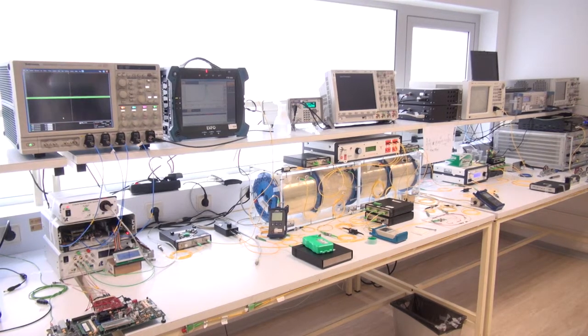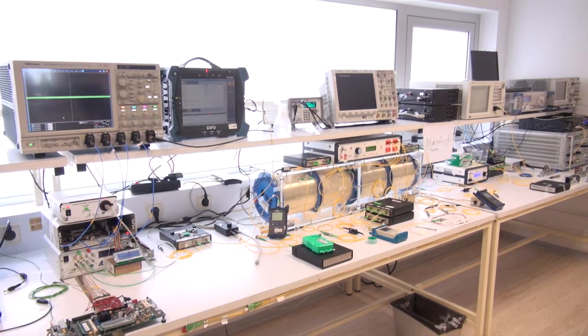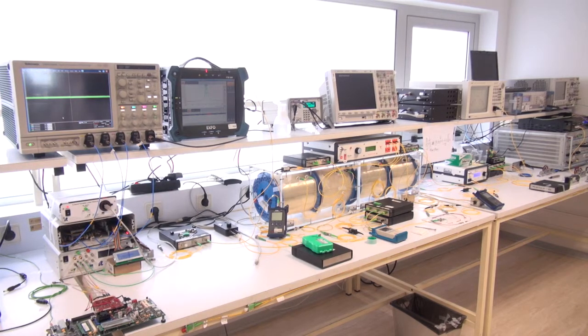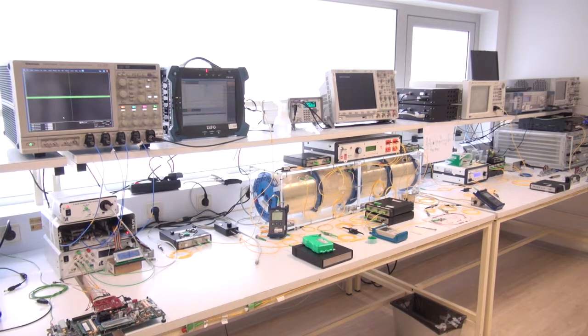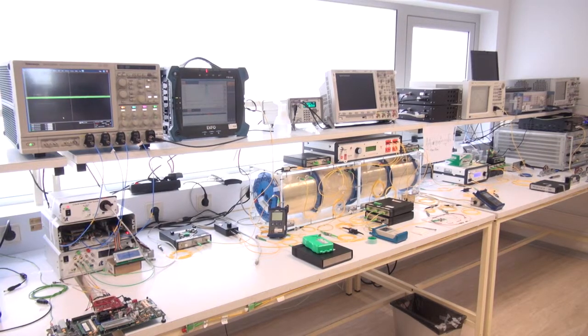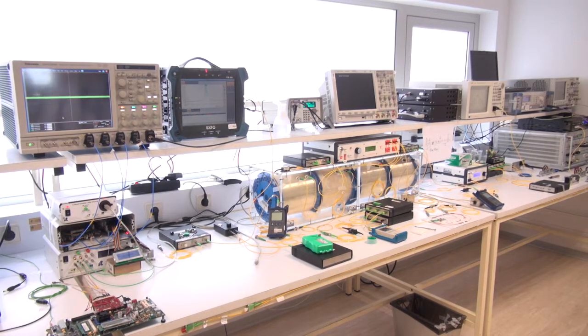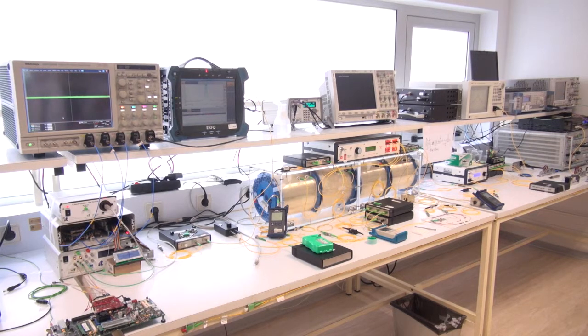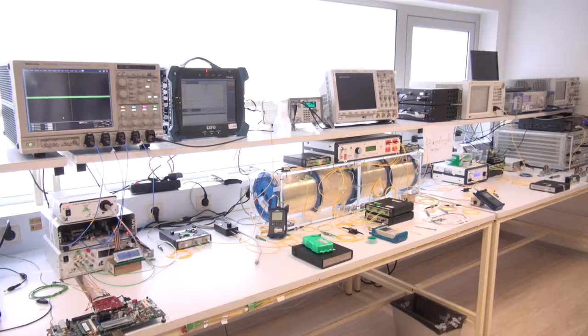A recirculating loop is an instrument in optical laboratories for simulating and analyzing long-distance optical transmission systems without actually using many spans of fiber and a large number of optical amplifiers. It uses a controlled optical switch which allows the optical signal from a transmitter to pass through an optical system many times.